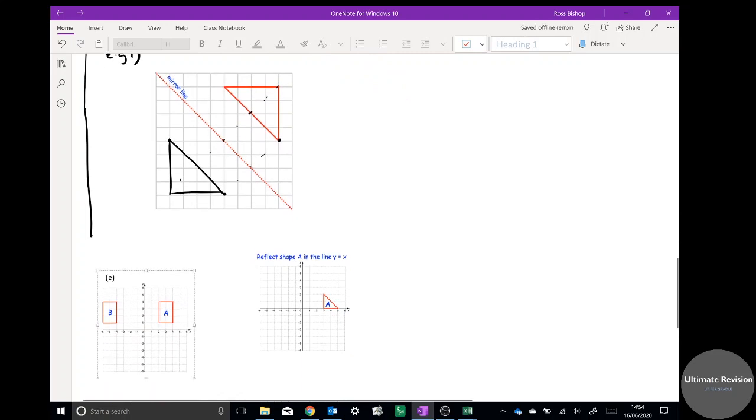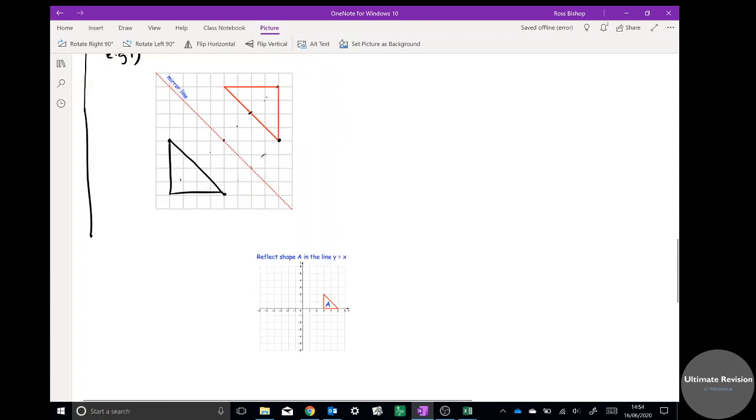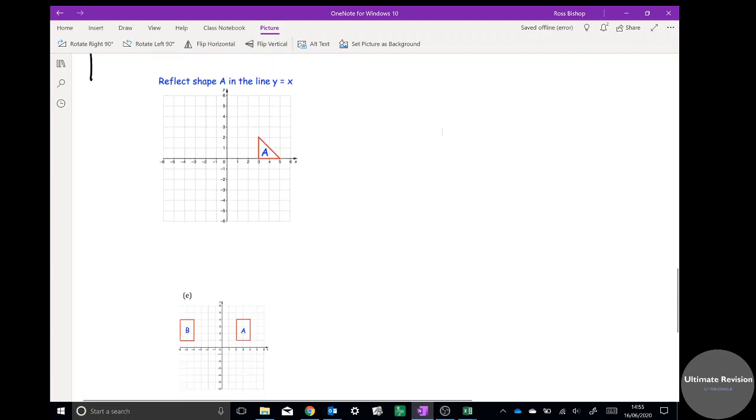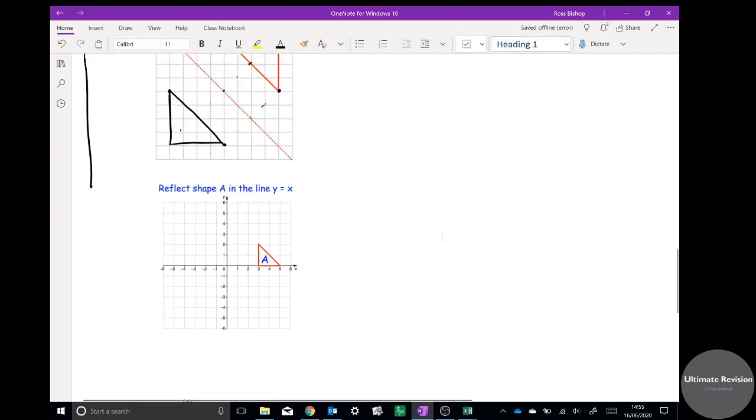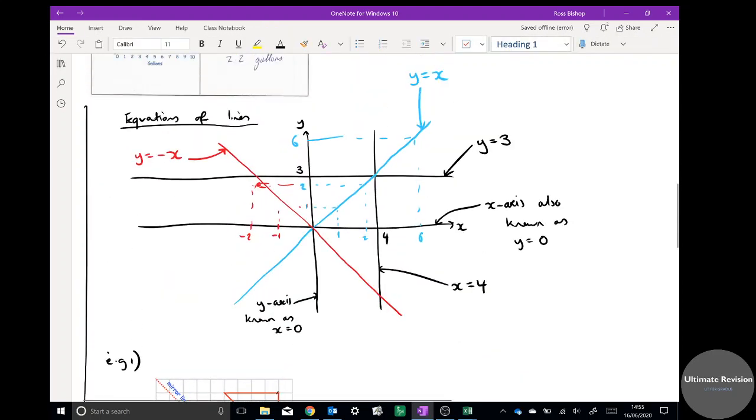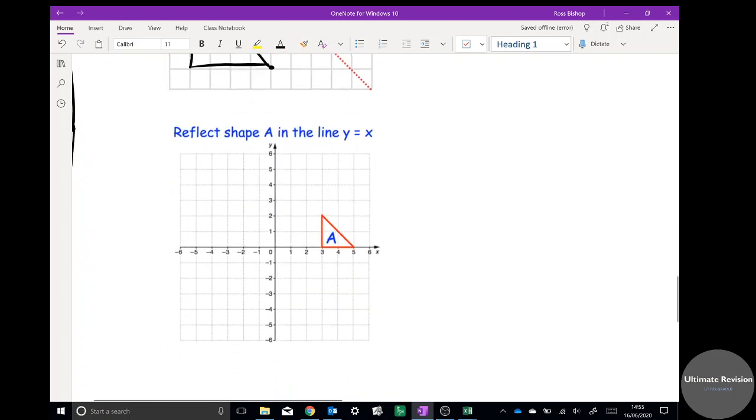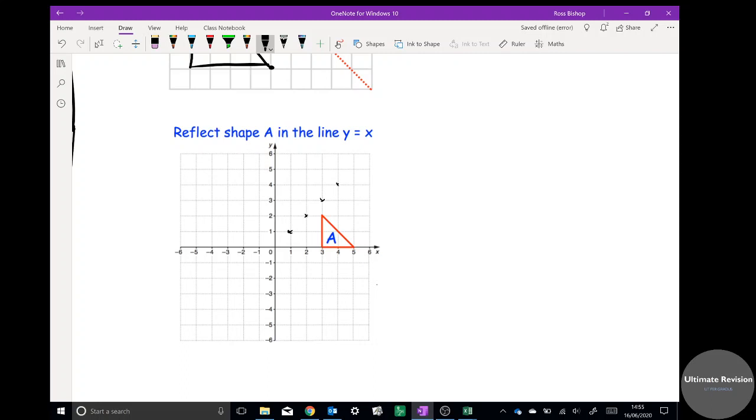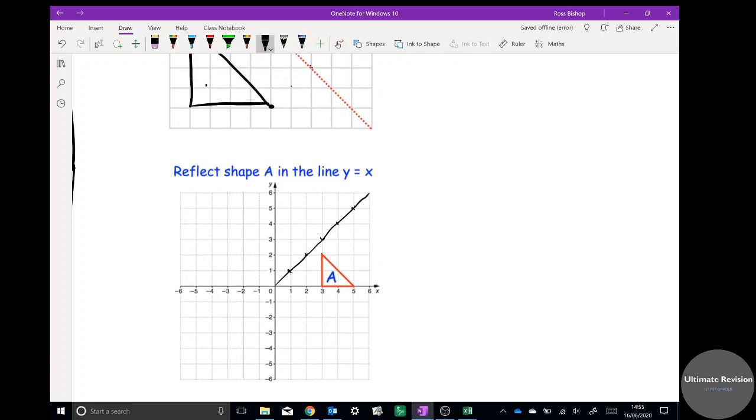Example two would be something like this potentially. Reflect shape A in the line y = x. So y = x, I might have to go back up to my help sheet here. y = x is the diagonal. So first thing I need to do is draw in the line. It's going to go through (1,1) because they're (1,1), (2,2), (3,3), and I'll draw a straight line passing through all of those, hopefully with a ruler. Now that is my mirror line. So I then use that as my mirror line and then I go to each point. That point's going to go there, this point's going to go (1,1½), and this point is (2,2½). And we usually label that A', that's the image of A.